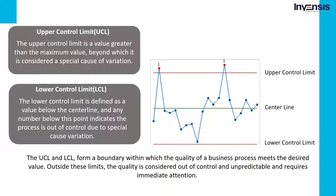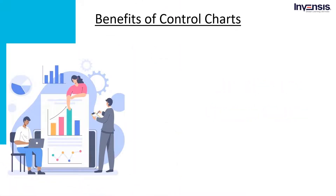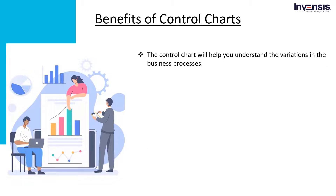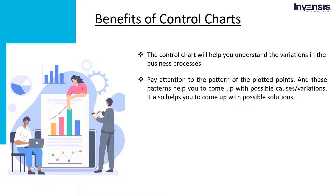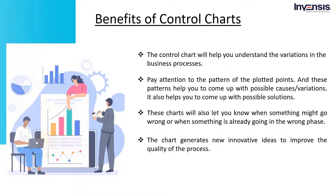Here are a few important benefits of using control charts. A control chart helps you understand variations in business processes. Variations within the limit indicate that the process is consistent and working properly. In contrast, variations that spike outside the control limit require action to make the process consistent. Paying attention to the pattern of plotted points helps you identify possible causes of variation and come up with solutions. These charts will also alert you when something might go wrong, or when something is already going in the wrong direction. The chart also generates new innovative ideas to improve the quality of the process.